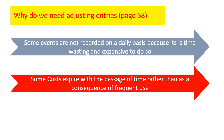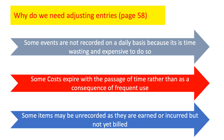some costs expire with the passage of time rather than as a consequence of frequent use. For example, if we buy a one-year insurance premium, whether we use it or not, our insurance validity will expire with the passage of time. Third, some items may be unrecorded as they are earned or incurred but not yet billed. For example, sometimes accountants forget to record a revenue that has been earned or an expense that has been incurred. Therefore, we need to prepare adjusting entries to bring our books into balance with the accrual basis of accounting.